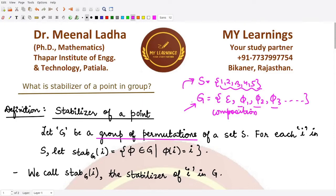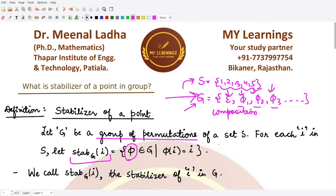For each element present within S, we are defining the stabilizer of each point. The stabilizer keeps it fixed — it does not let it become unstable. For each i present in S, the stabilizer of i in G contains all those permutations which are members of G and keep that element fixed — they do not affect this element.